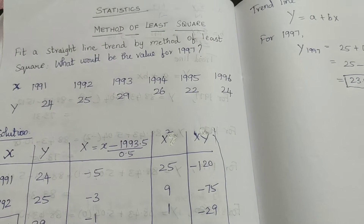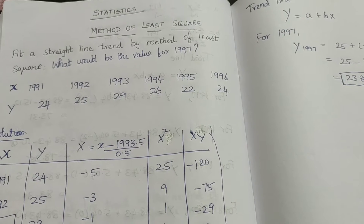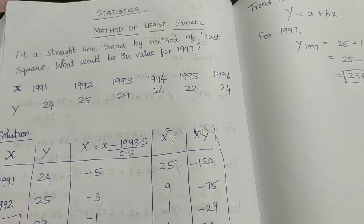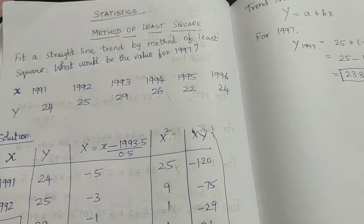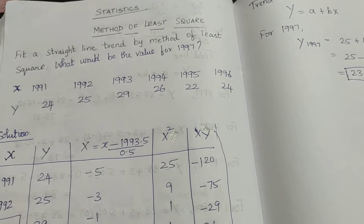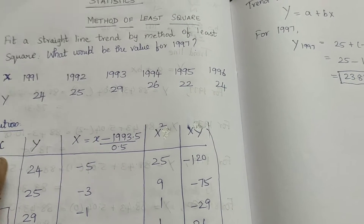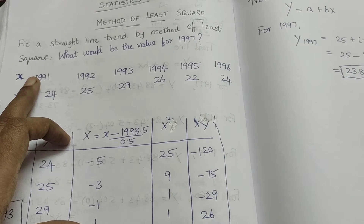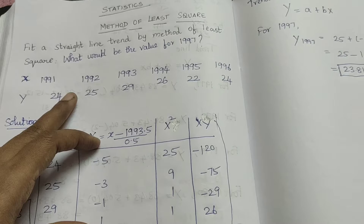Hi everyone. Today we are going to discuss the method of least squares. We will find statistics that fit a straight line trend by the method of least squares. Our question will be to fit a straight line trend by the method of least squares, and find what would be the value for the year 1997.